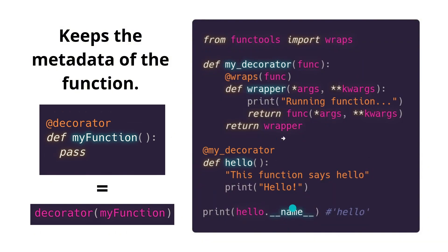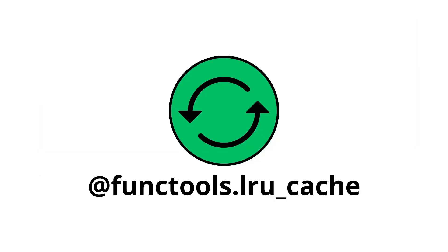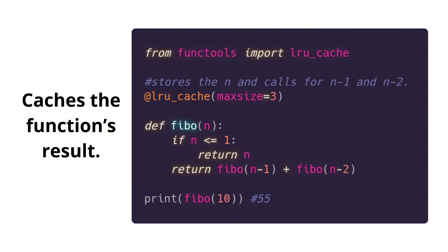it will actually return the name of 'my_decorator', because 'hello' is wrapped inside 'my_decorator'. But with @wraps on your decorator, you actually keep all the data from the 'hello' function. Therefore what is printed is 'hello' rather than 'my_decorator', because this preserves the metadata of the function.